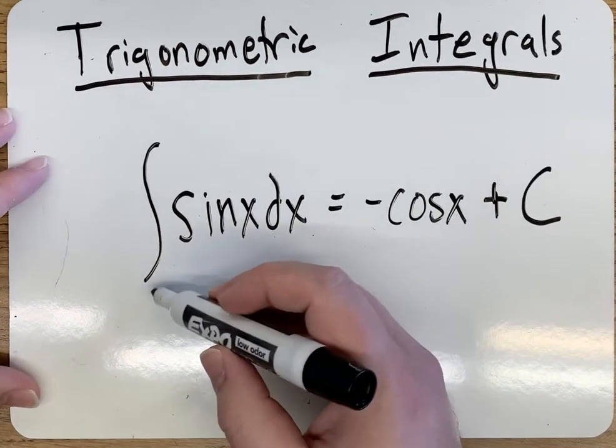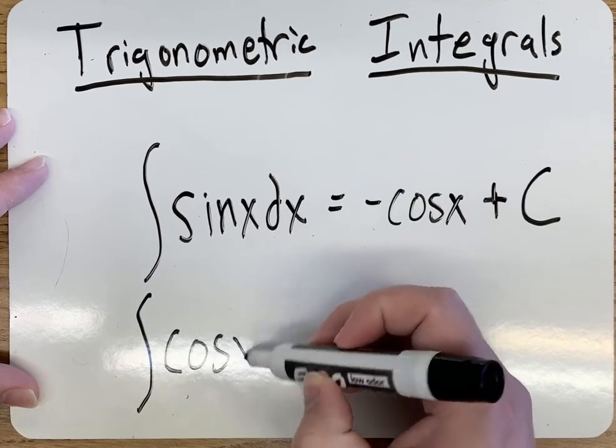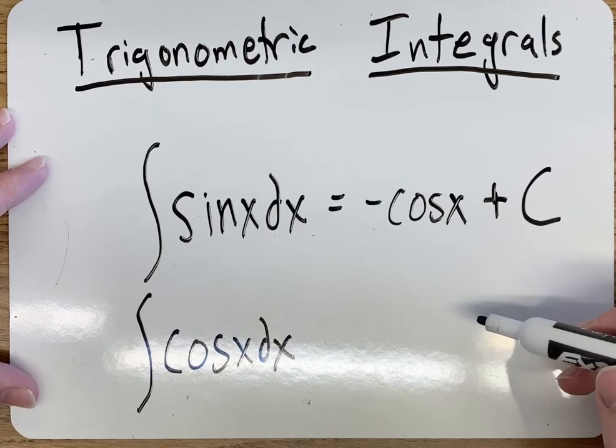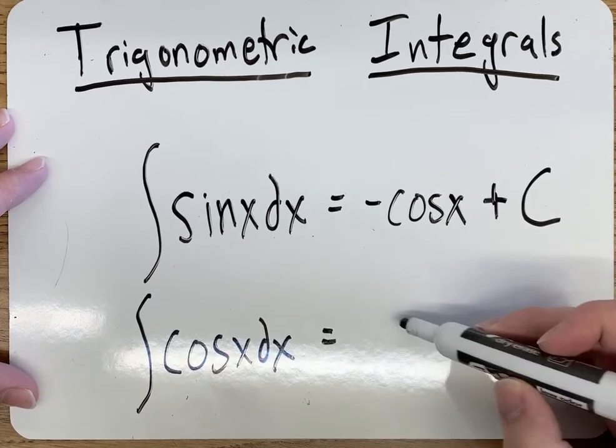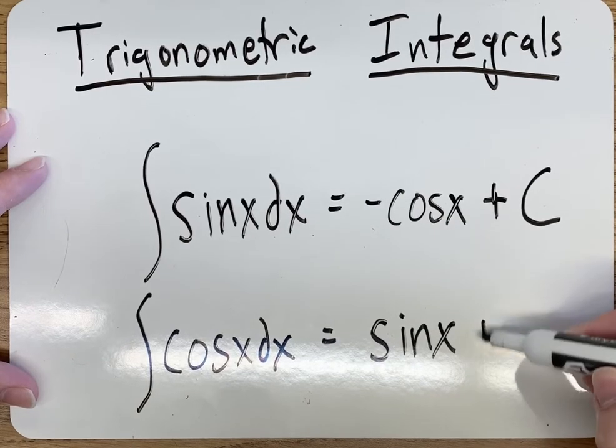Now going off of cosine x, cosine x dx, the antiderivative of cosine x ends up being positive sine x plus c.